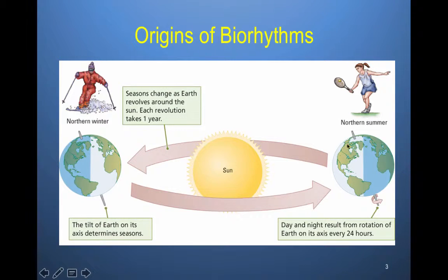The seasons change as the Earth revolves around the sun, and each revolution takes one year. The tilt of the Earth on its axis is what actually determines seasons. At the other side of the world right now, they'll be entering their winter season just as we are entering our summer season. Day and night also result from the rotation of the Earth on its axis every 24 hours, so when it is noon here, on the other side of the world it will be midnight.